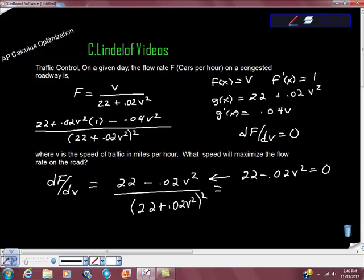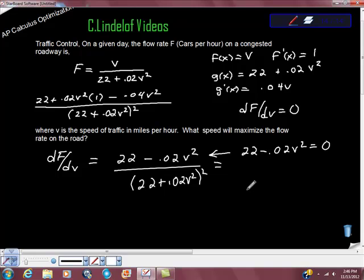We end up with this, we're almost done, believe it or not. So we get V squared equals 22 over .02. V equals, this turns out to be 1,100, so it's the square root of 1,100.